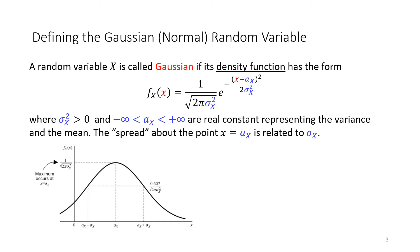A random variable X is called a Gaussian random variable if its density function has the following form. This definition is based on the PDF — a mathematical expression where X represents the phenomenon being measured, such as weight, height, voltage, or current. There are two parameters: μ_x represents the mean, the center of the distribution, and σ_x is the standard deviation, related to the variance, which controls the width of the distribution.